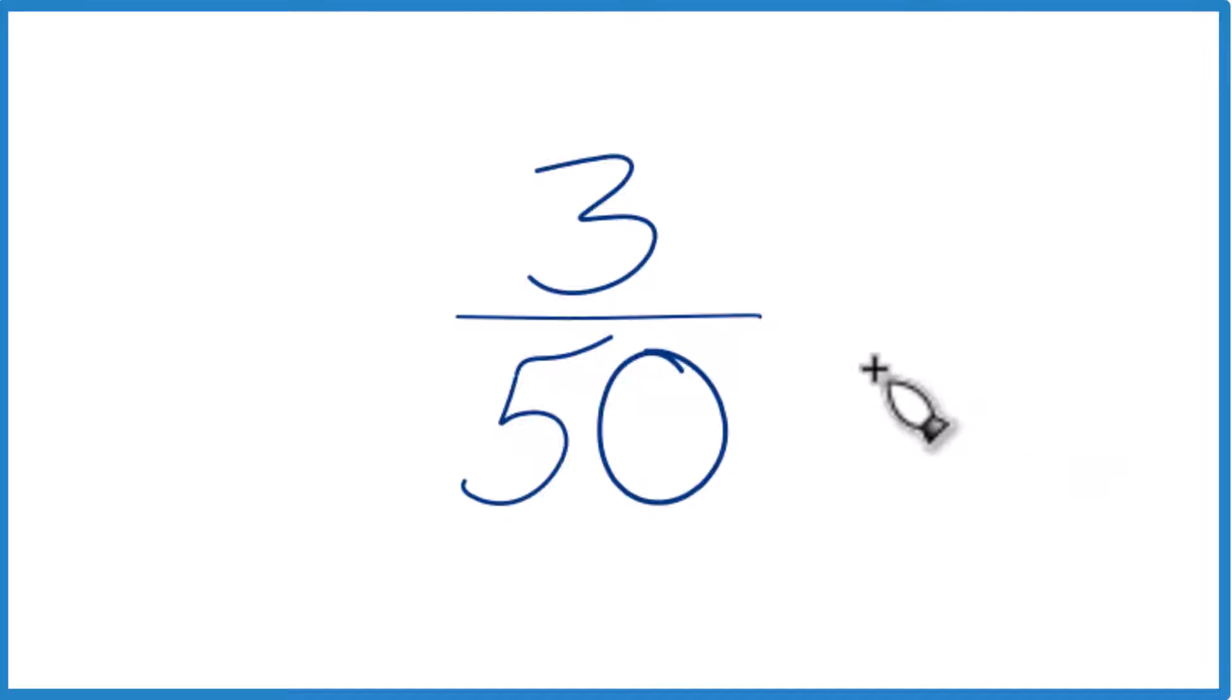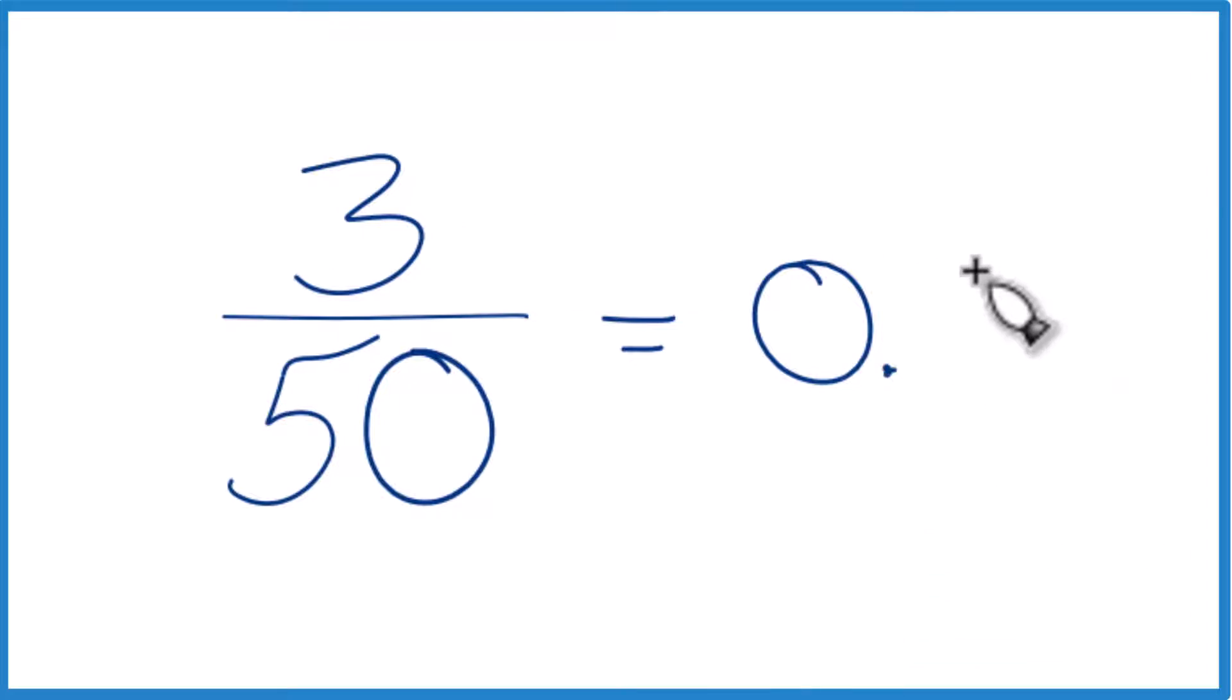First off, you could just take and divide 3 by 50 on a calculator. If you do that, you get 0.06. So that's one way to do it.